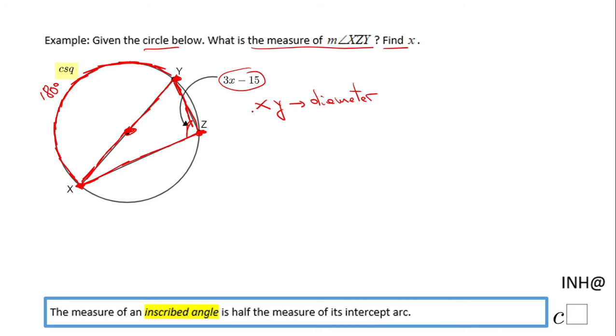That means this arc you see here, the red one, is half of 360, which is 180 degrees. So now we know the measure of arc XY is 180 degrees. The measure of angle XZY will be half of the measure of arc XY, so in our case it will be 180 degrees divided by 2.